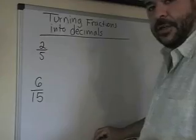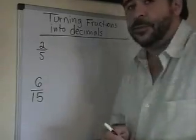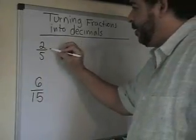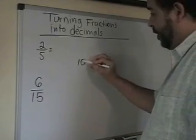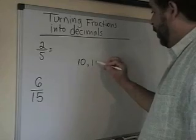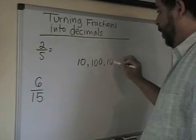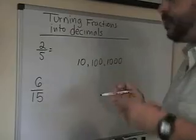To turn a fraction into a decimal, you must get a denominator of 10, 100, 1,000, and so on—one with zeros. So we have to get a denominator of 10, 100, or 1,000.